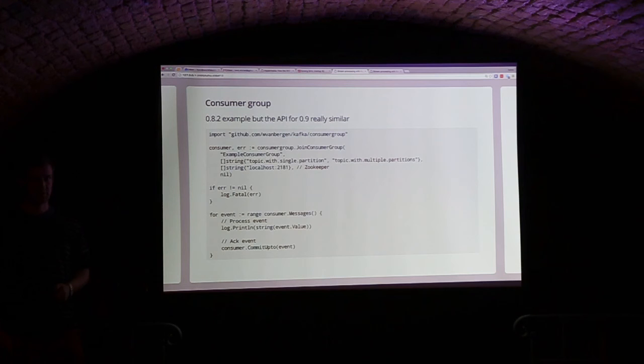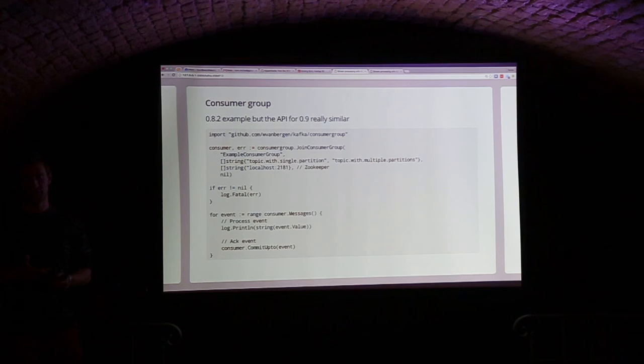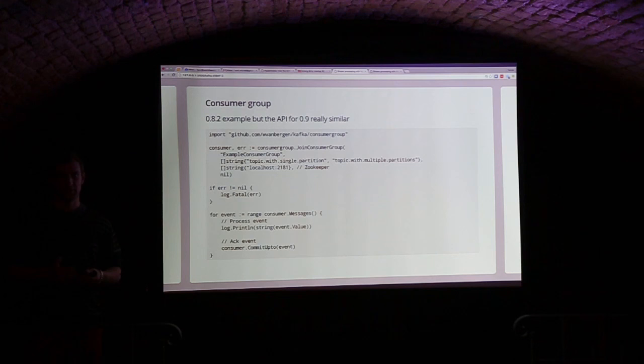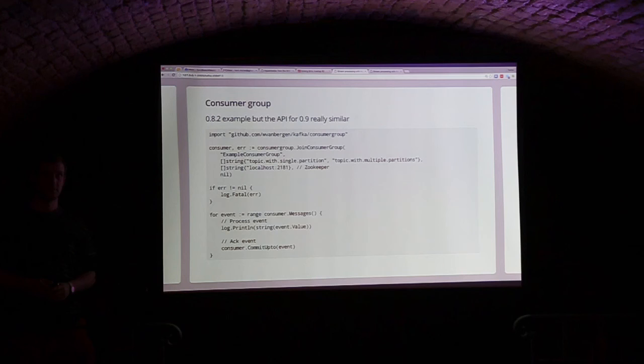What they usually do is mark an offset as committed and then flush it periodically — not every single message goes to ZooKeeper. It commits offsets maybe every 30 seconds or after a few thousand messages are processed. ZooKeeper can be a bottleneck in that regard, yes.